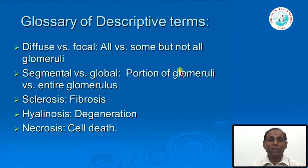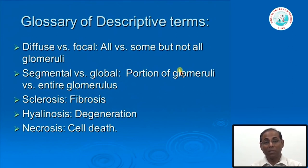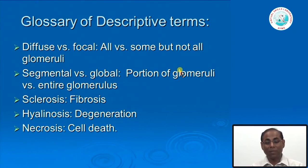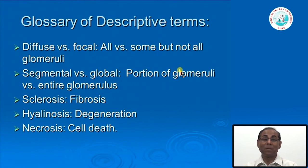We also use the terms 'sclerosis' and 'fibrosis,' which basically refer to laying down of collagen—the senescent phase after the disease has burnt out—and 'hyalinosis,' which looks like eosinophilic or reddish material under the microscope. Sclerosis and hyalinosis are sometimes used interchangeably. We also use 'necrosis,' 'cell death,' and 'apoptosis.' These terms are added when describing glomerulonephritis.